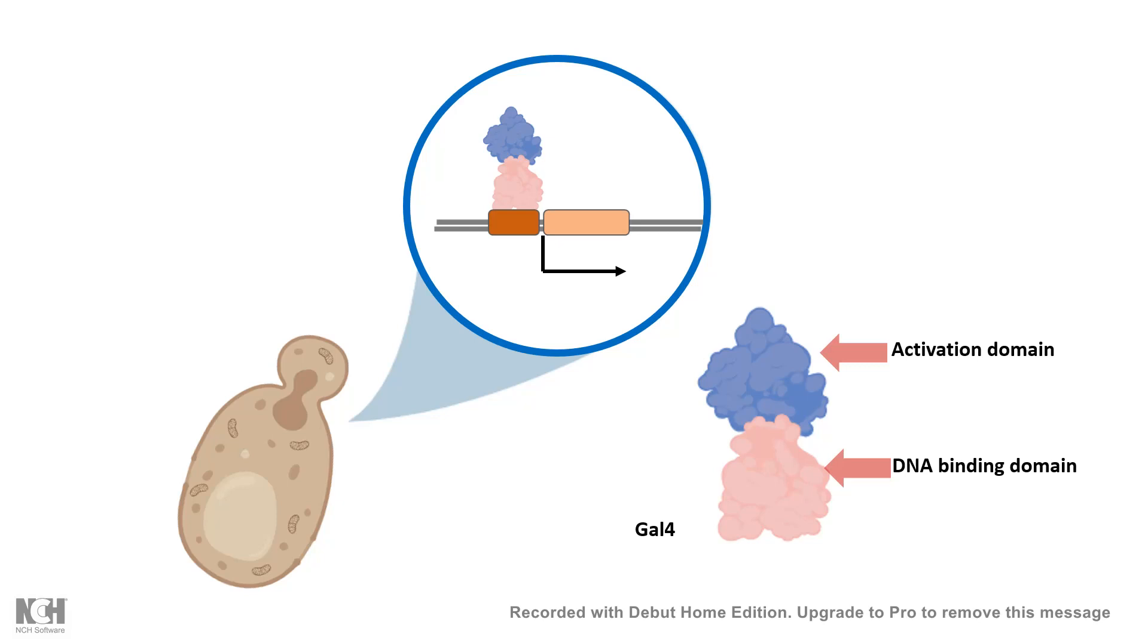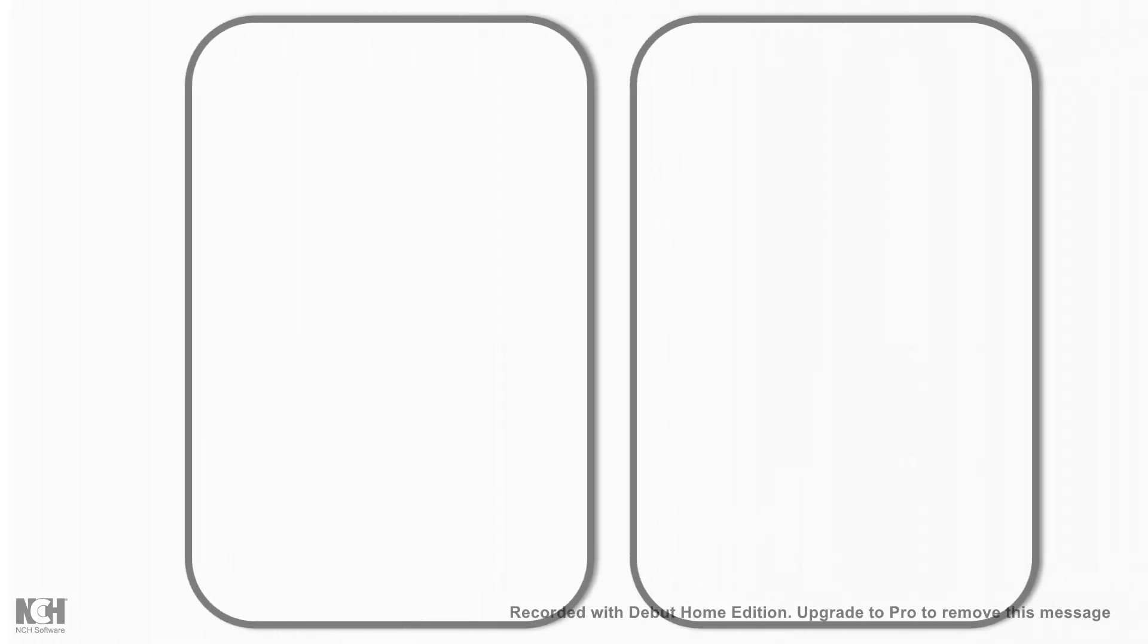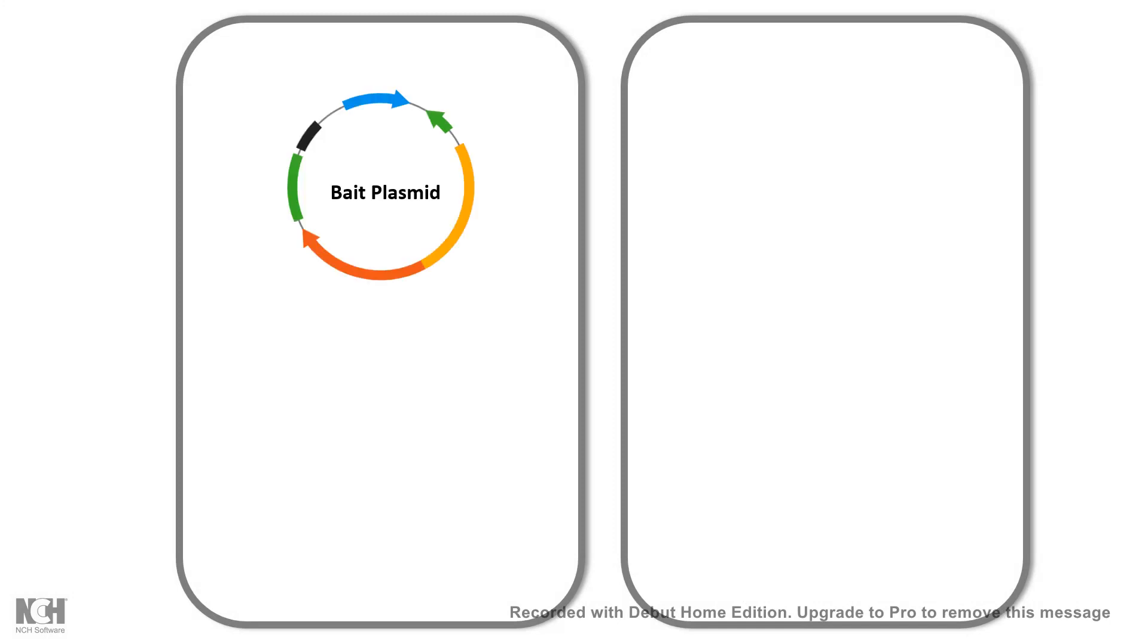Now in Yeast Two-Hybrid system you have two plasmids. One plasmid is known as bait plasmid. Second plasmid is known as fish plasmid. So you think that a protein A is interacting with protein B. So your bait would be protein A because you want to understand whether A is interacting with B or C or D.